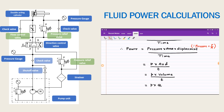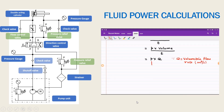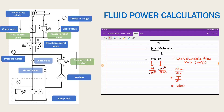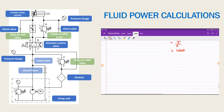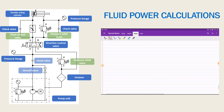Here q is the volumetric flow rate expressed in meter cube per second. Pressure is expressed in Newton per meter square or Pascal, and q is discharge in meter cube per second. The meter cube and meter square cancel to give Newton meter per second, that is joule per second, or watt.